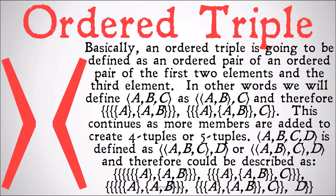And therefore it could be described as — whew, it's a long one — the class of the class of the class of the class of the class of the class of the class of the class of A and the class of A, B and the class of the class of the class of A and the class of A, B and C and the class of the class of the class of the class of the class of A and the class of A, B and the class of the class of the class of A and the class of A, B and C and D.